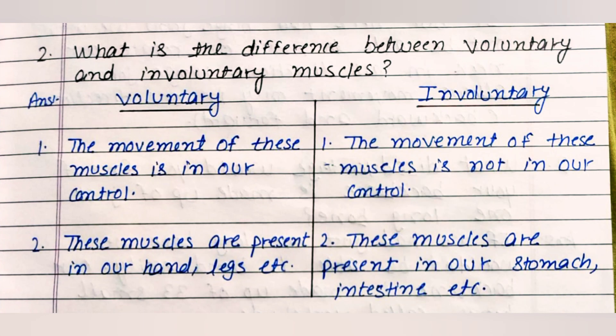Question two: What is the difference between voluntary and involuntary muscles? Voluntary muscles: the movement of these muscles is in our control, and they are present in our hands, legs, etc. Involuntary muscles: the movement of these muscles is not in our control, and they are present in our stomach, intestine, etc.